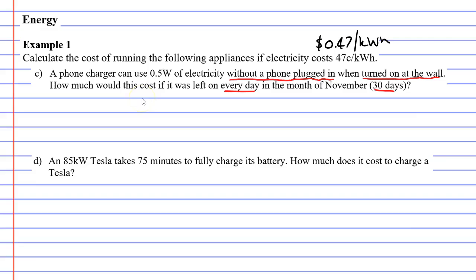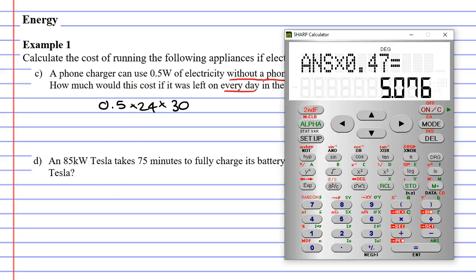So let's take this power rating of 0.5 watts. And if we leave it on all day, we're going to times it by 24 hours, because there's 24 hours in a day. And we're also going to times it by 30, because there's 30 days in a month, or in this particular month anyway. So what do we get?